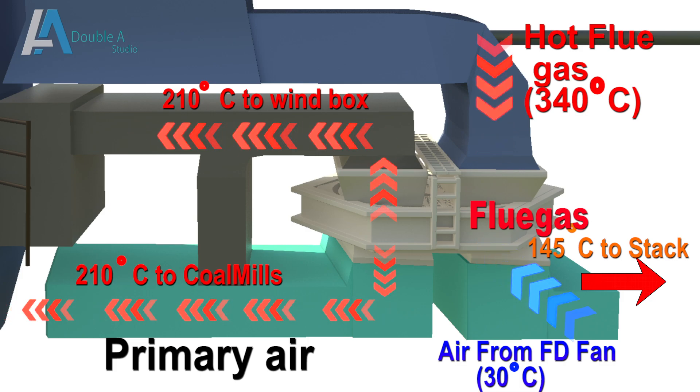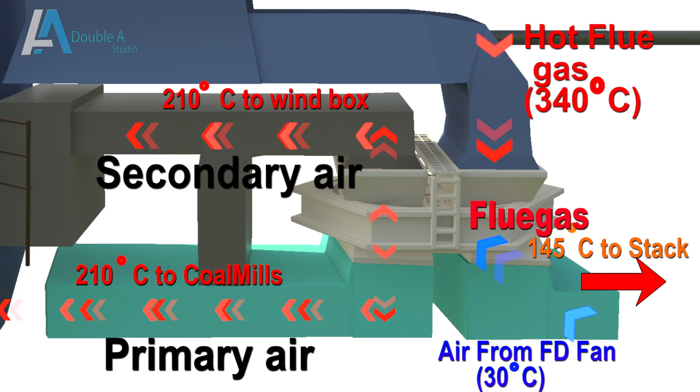Hot primary air is sent to pulverizer by primary air fan. It dries coal and transports powdered coal to furnace. It also reduces lump formation of powdered coal. Secondary air goes to combustion chamber through wind box. It promotes fast and complete combustion of fuel.